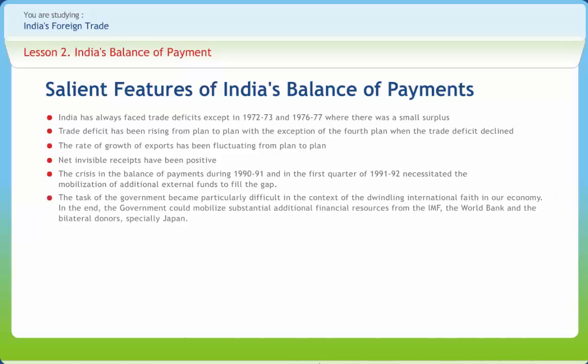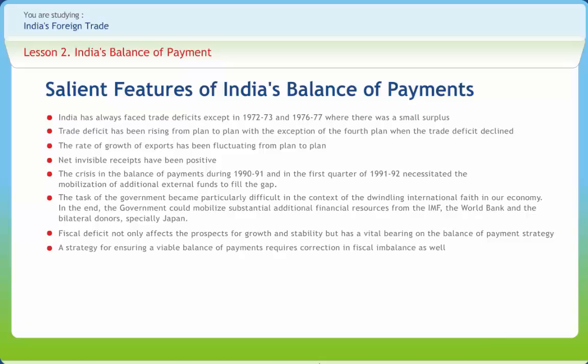The task of the government became particularly difficult in the context of the dwindling international faith in the economy. In the end, the government could mobilize substantial additional financial resources from the IMF, the World Bank and bilateral donors, especially Japan. Fiscal deficit not only affects the prospects for growth and stability but has a vital bearing on the balance of payment strategy. There has been a low level of utilization of external assistance, resulting in a substantial part of authorized loans being in the pipeline.